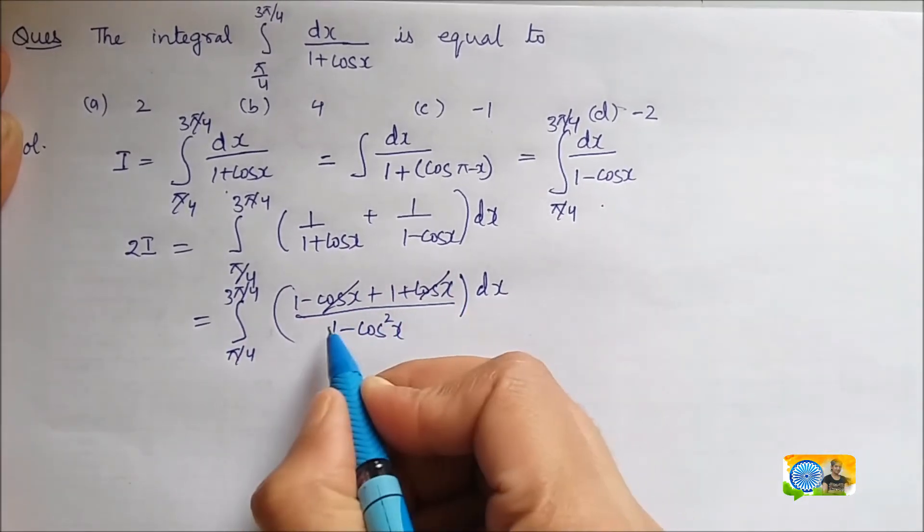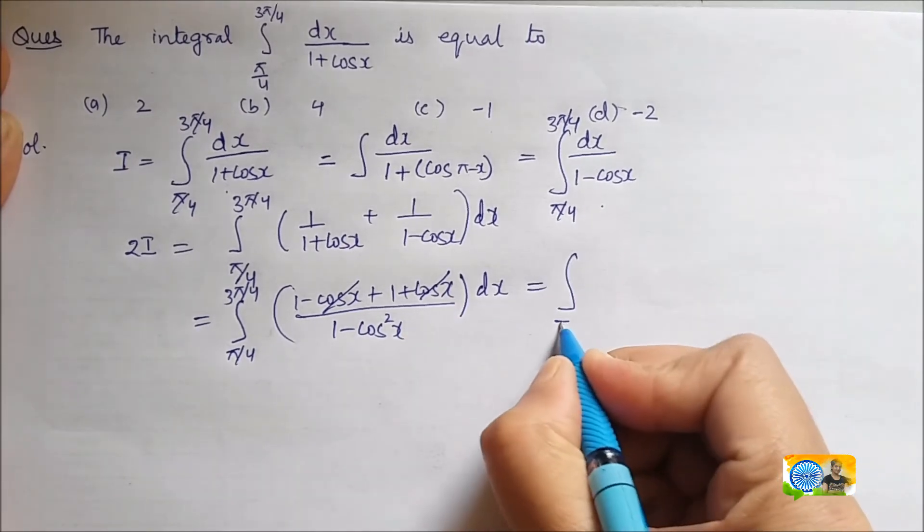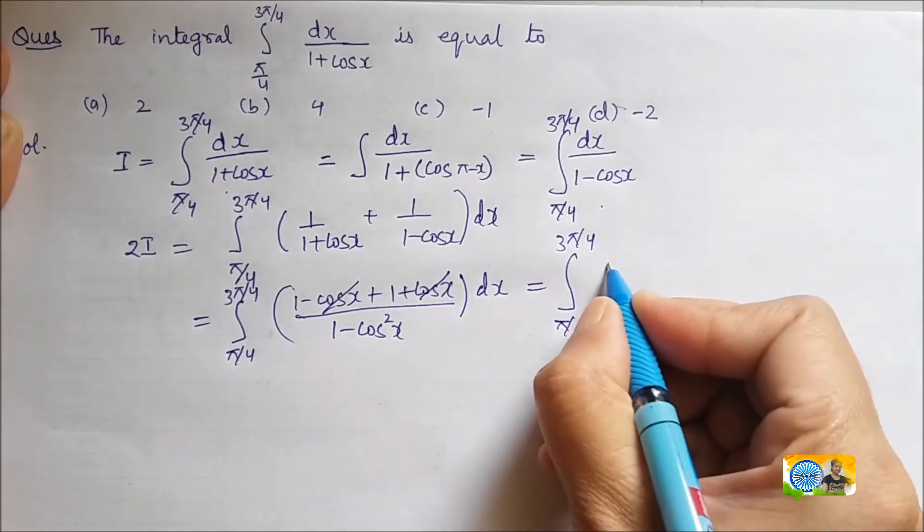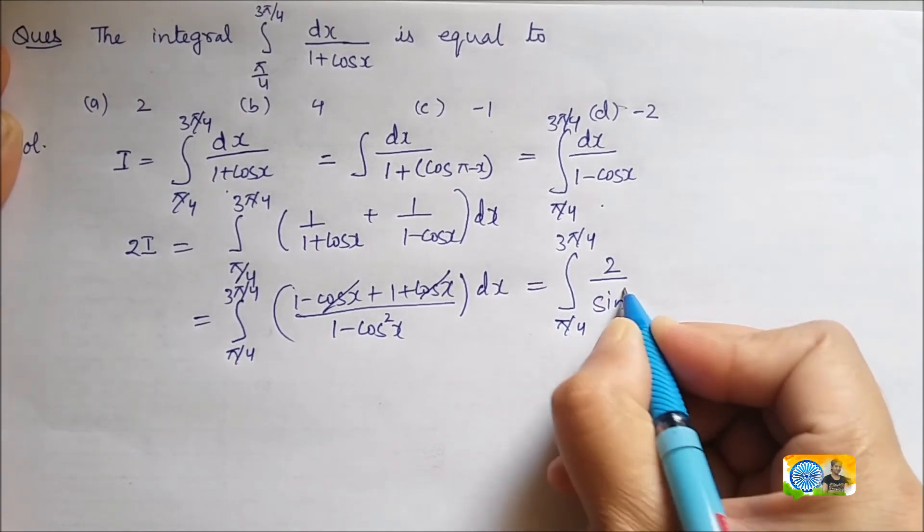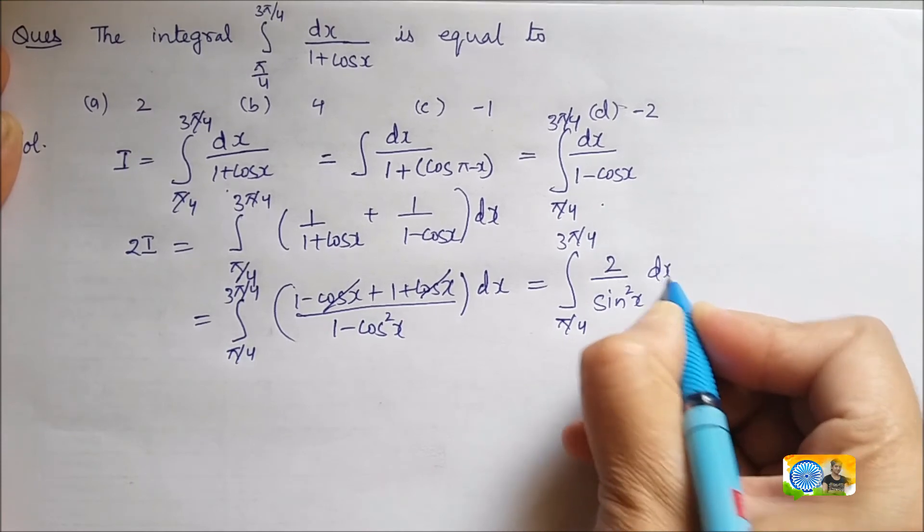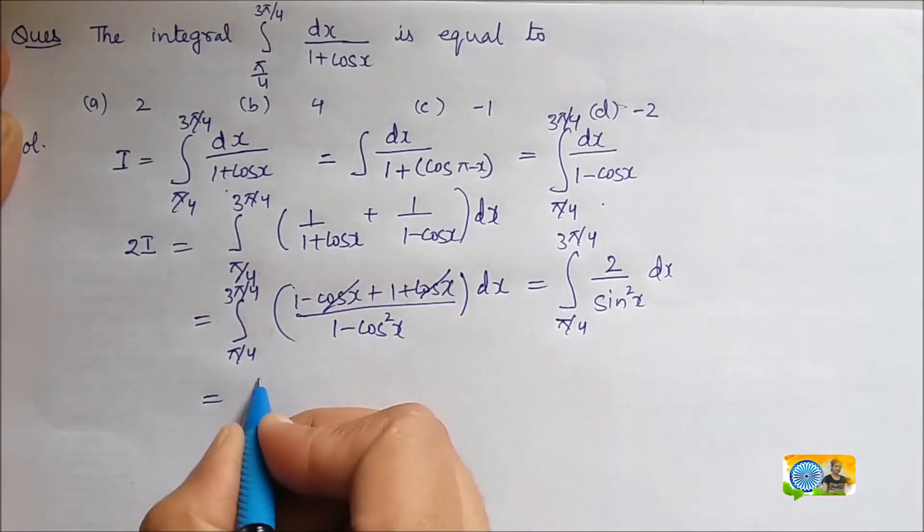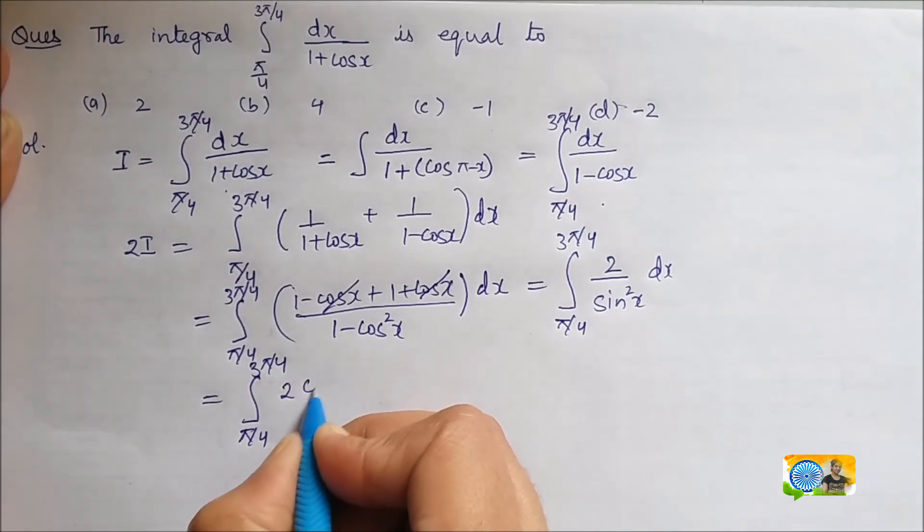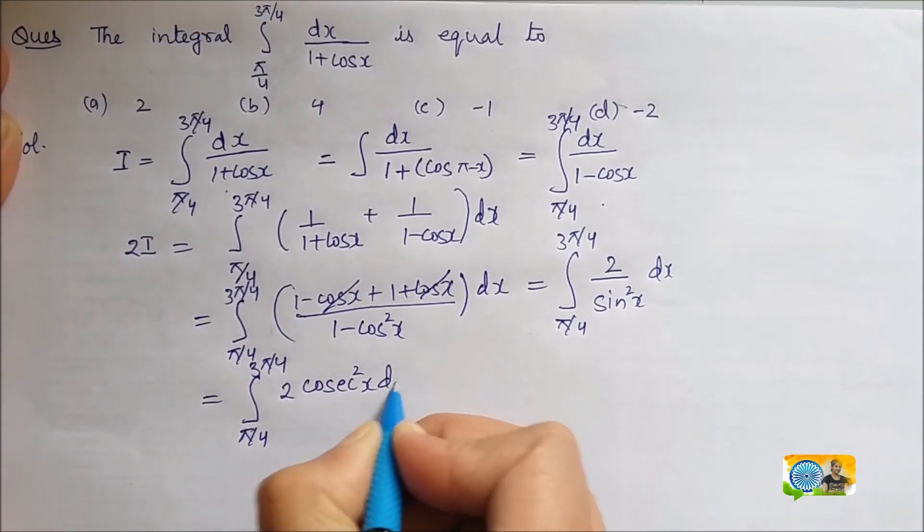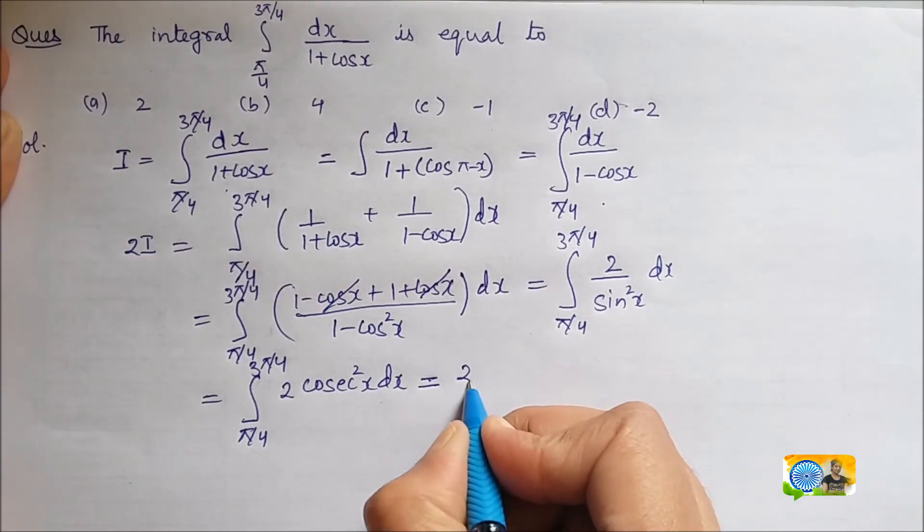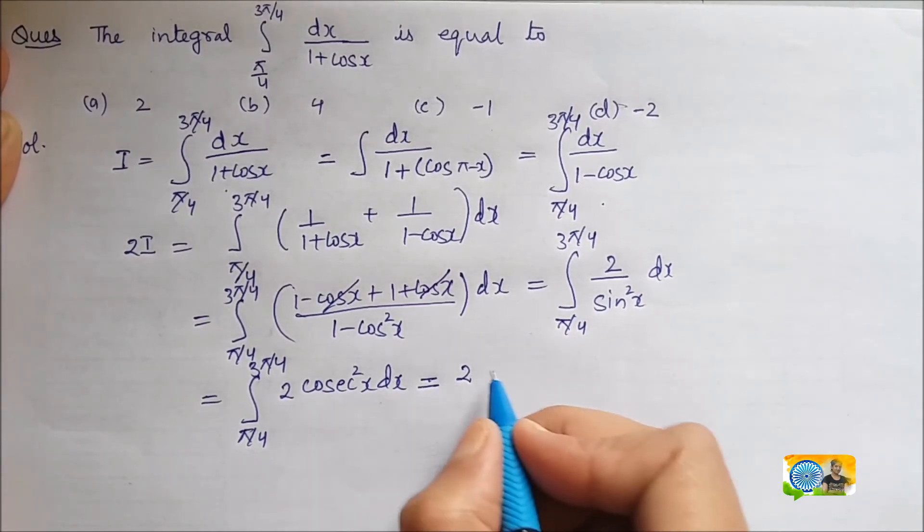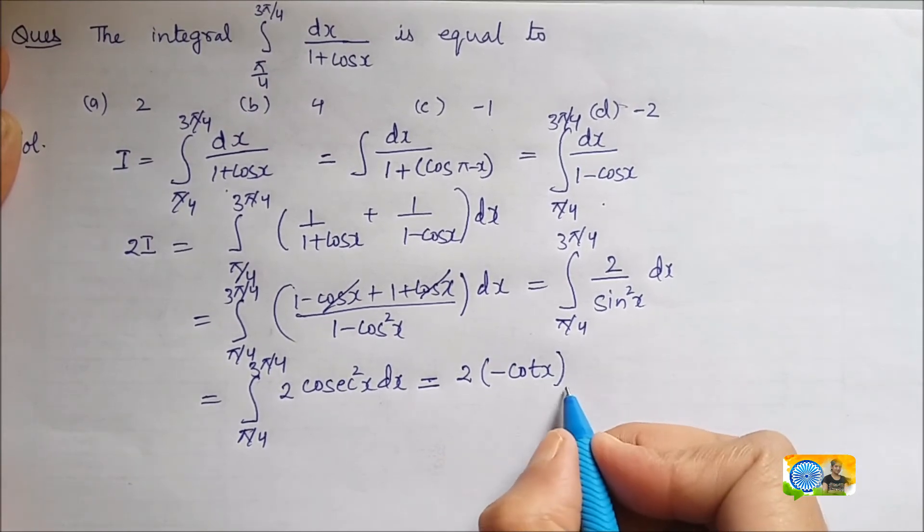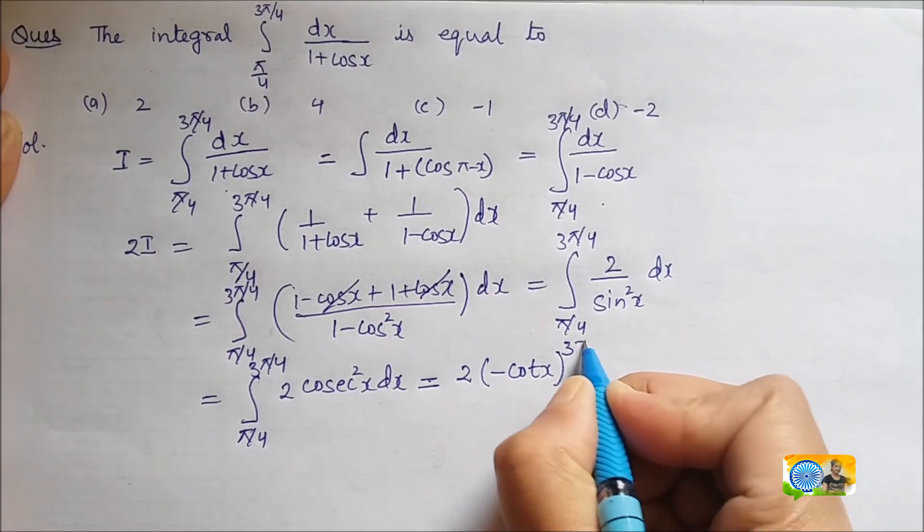And I am left with integral between the limits pi by 4 to 3 pi by 4. This is 2 upon sin square x dx which is equal to 2 times integral of cosec square x. So, this is 2 times integral cosec square x dx. Limits are pi by 4 to 3 pi by 4.